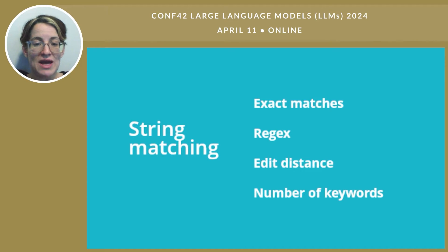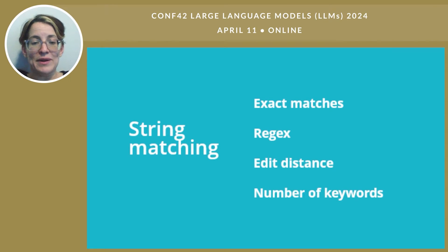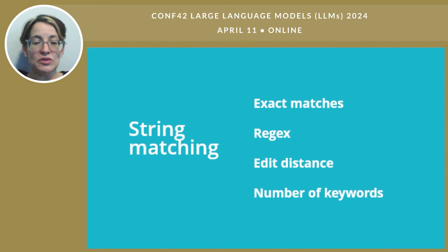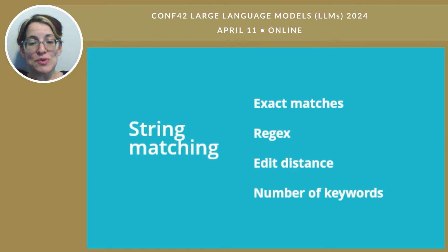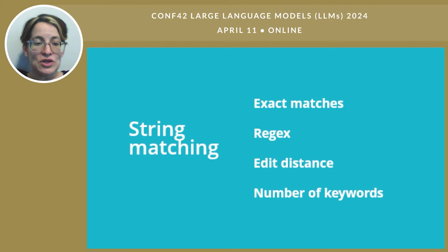First option: string matching. We've got some choices here. We can look for an exact match, like the answer to be an exact sentence, or to contain a particular substring, like if we ask it for the capital of France, is Paris somewhere in that response? We can use regular expressions or regex if there's a pattern we want, like if we want a particular substring but only if it's a standalone word, not part of a bigger word. We can measure edit distance, or how syntactically close two pieces of text are — like how many characters we have to flip to get from one string to another. Or we can do a variation of exact matching where we find a list of keywords rather than just one.